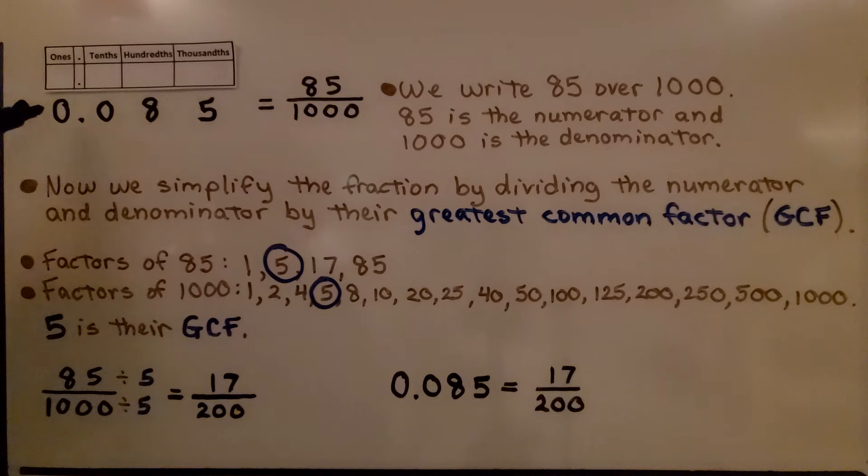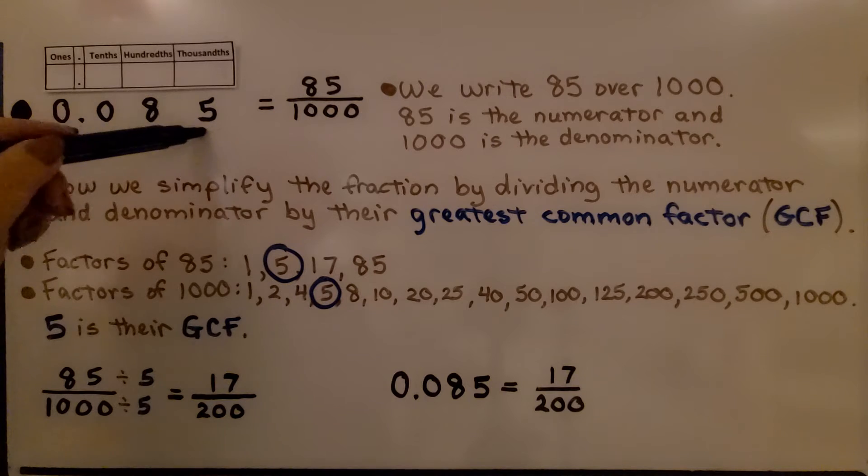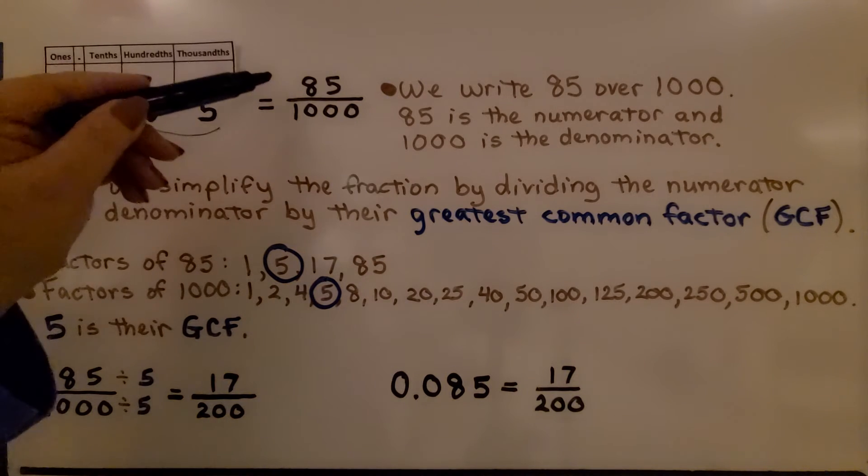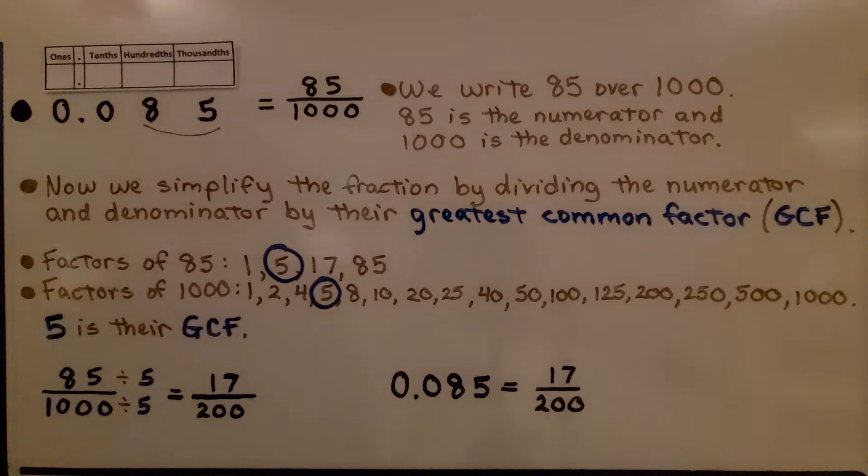Here we have the decimal 0.085. If you remember your place values of your decimals, we can see the 5 ends in the thousandths place. We write 85 over 1000. 85 is the numerator and 1000 is the denominator. Now we simplify the fraction by dividing the numerator and denominator by their greatest common factor, the GCF.